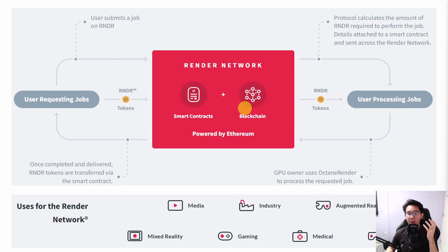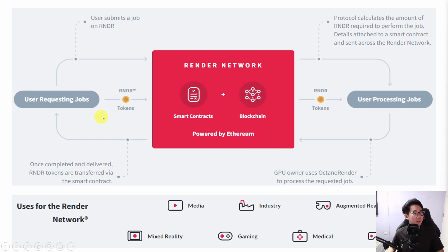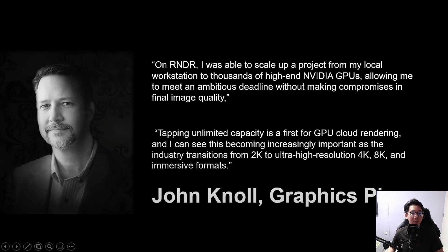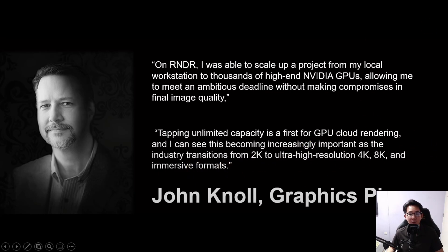One way to think of it is like they are the Uber for GPU rendering — there is idle manpower and idle cars that can transport food or people when there's a request, and it works pretty much the same way. Anyone can become a node, provide their idle GPU, and whenever there is a request they earn rewards for doing so. The users for Render Network are quite extensive and don't necessarily have to be in the metaverse or crypto world. For example, the creator of Photoshop was the first user of Render Network, calling it tapping unlimited capacity — a first for GPU cloud rendering — and noting it will become more important as the industry transitions towards 8K and more immersive formats.